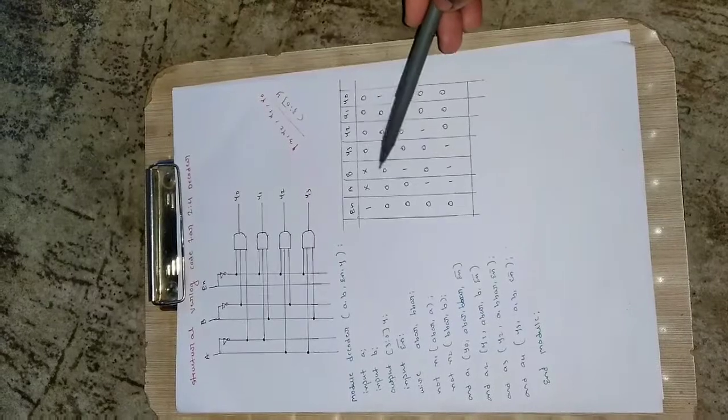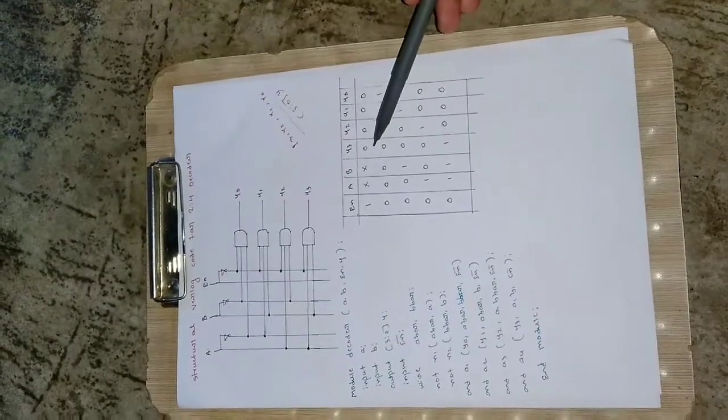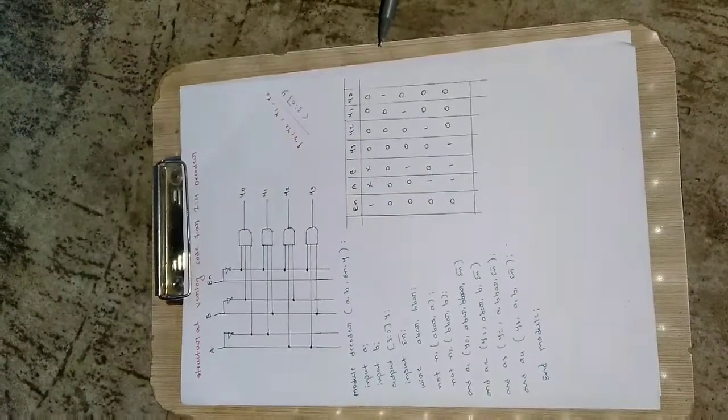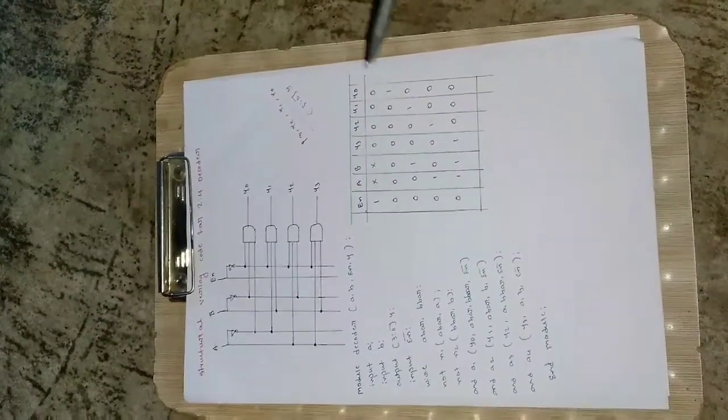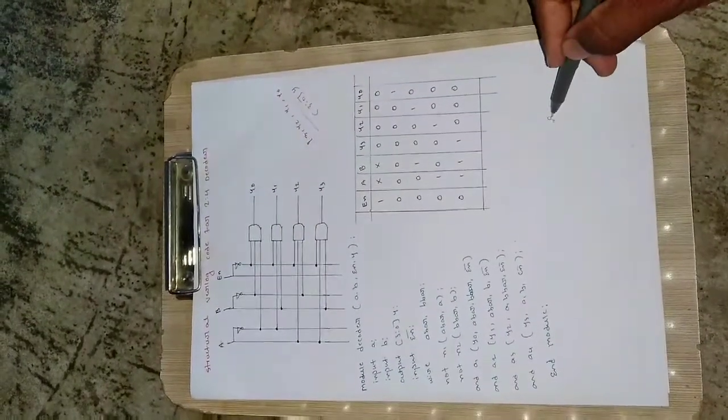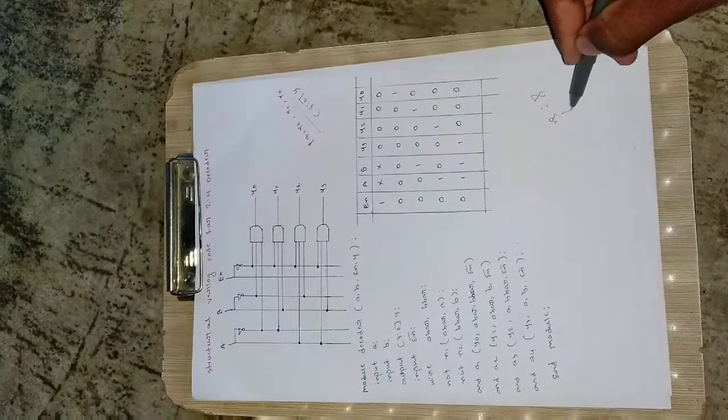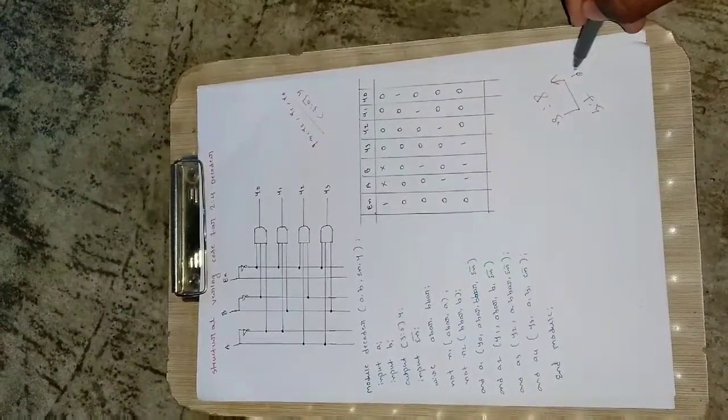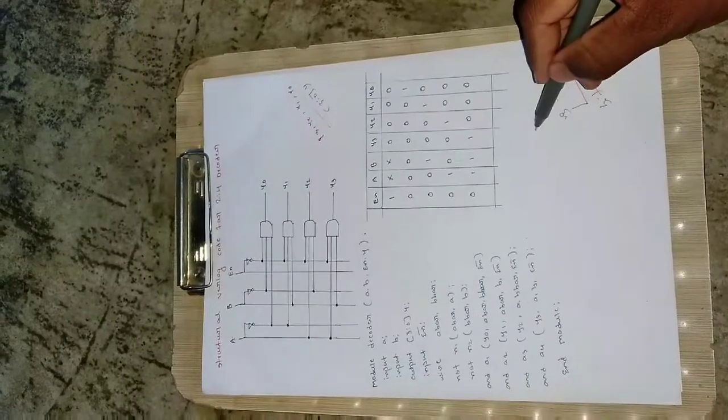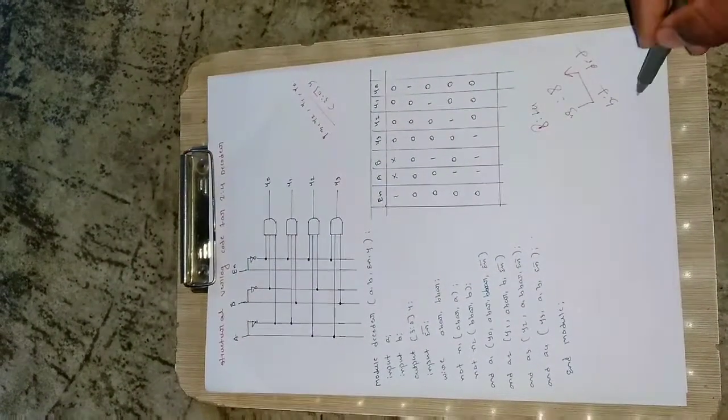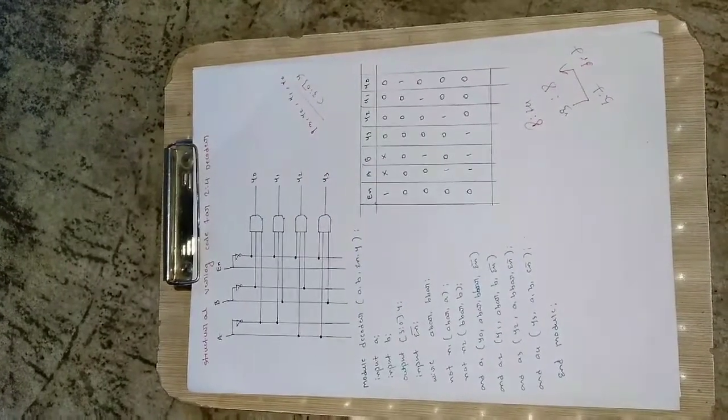It can have multiple versions like 3-to-8 decoder, 4-to-16 decoder, and 8-to-64 decoder. In a 3-to-8 decoder, 3-bit data will be converted to 8-bit data. Similarly, we will be having different combinations there.